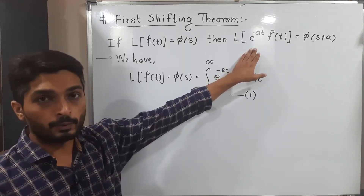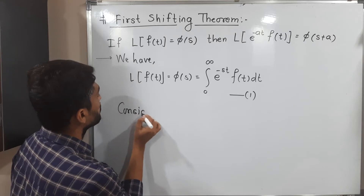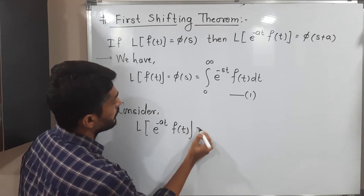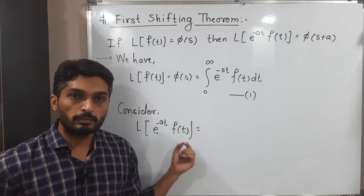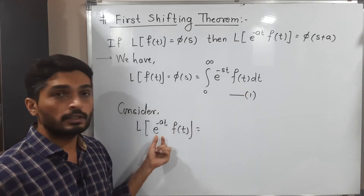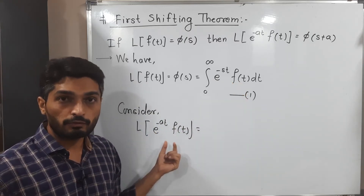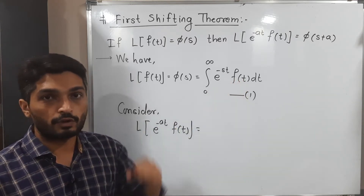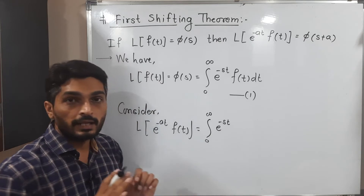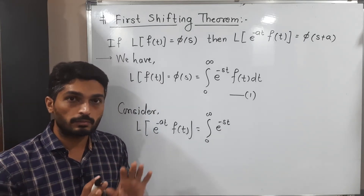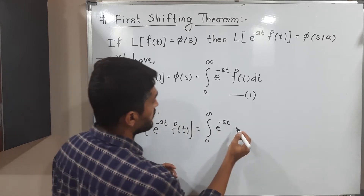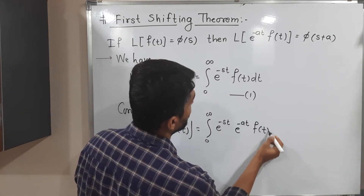Now let us consider what we have to prove. Consider Laplace of e raised to minus at times f(t). Using the definition, when you have f(t) inside a bracket you simply put f(t) there, but when you have e raised to minus at as a multiple of f(t), we place that entire product at the position of f(t). So it will look like: integration from 0 to infinity of e raised to minus st times e raised to minus at times f(t) dt.